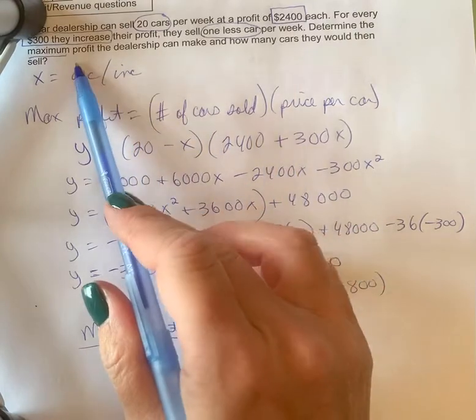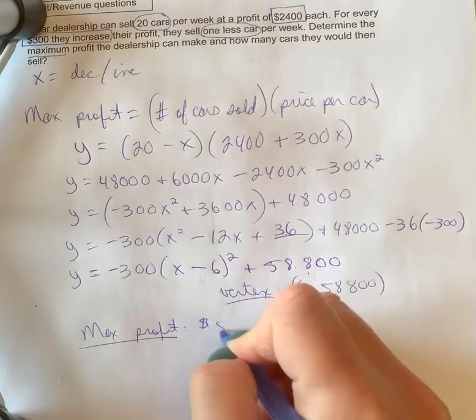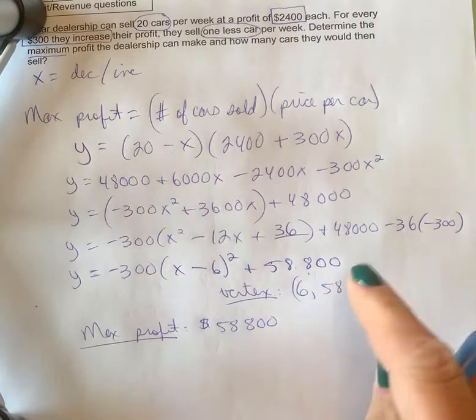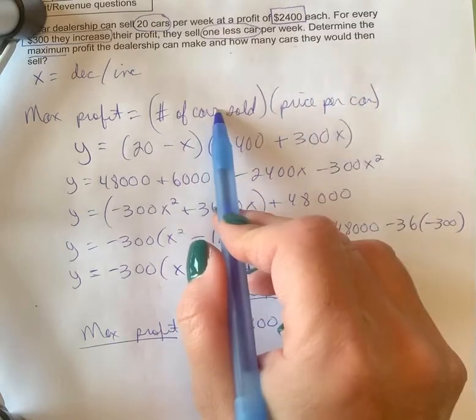All right, so my max profit is what it's asking: what's the max profit and how many cars would I sell? So my max profit is 58,800—it's the y value.